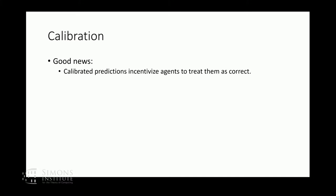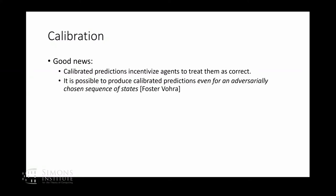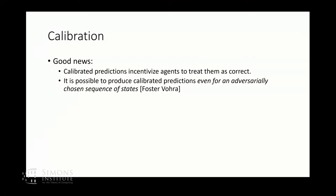Calibration has some good news but also some bad news. Good news: calibrated predictions incentivize agents in a very strong sense to treat them as correct — they can be used straightforwardly and transparently. Also, it's actually feasible to come up with calibrated forecasts, at least in principle. We've known since Foster and Vohra that there are algorithms that can interact in an online sequential environment and produce forecasts guaranteed to be calibrated in hindsight, even if the sequence is chosen adversarially. Calibrated in hindsight means the expectation is over a random choice of day — you play everything out, there's an empirical distribution over time steps, and you pick a random time step.